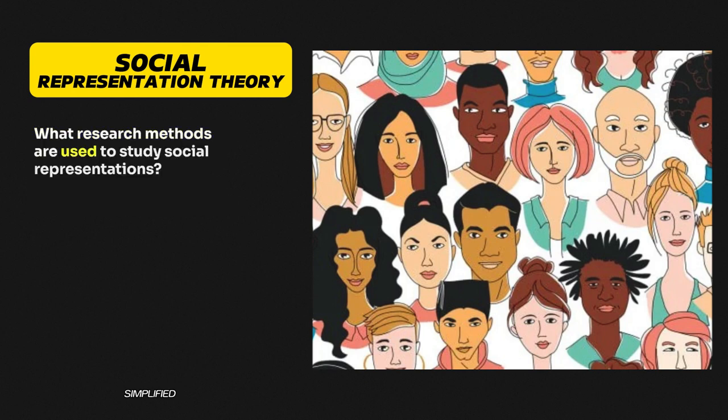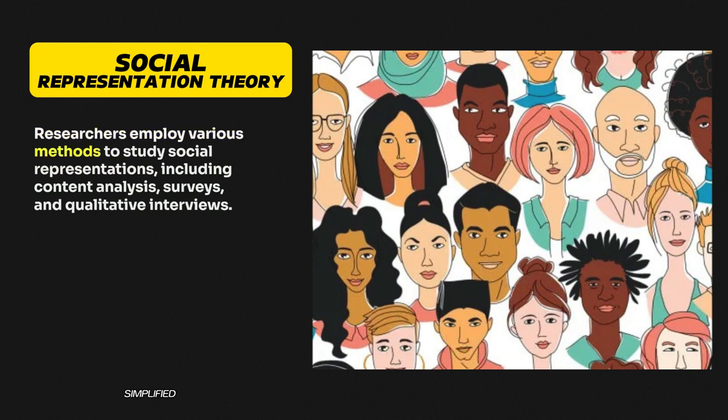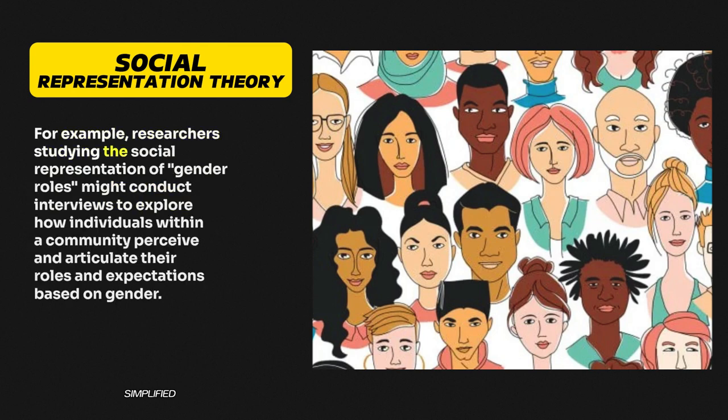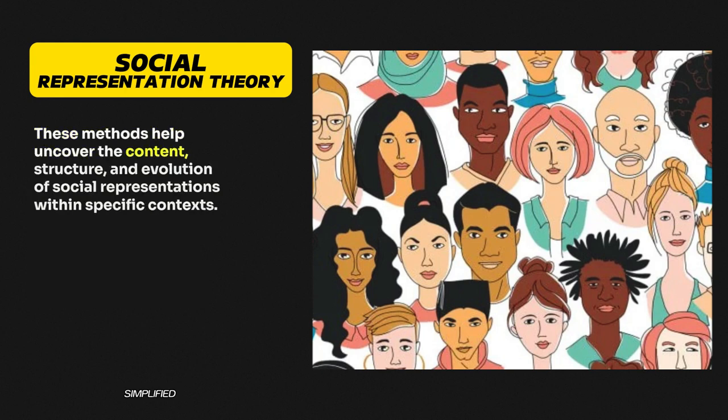Question 8: What research methods are used to study social representations? Researchers employ various methods to study social representations, including content analysis, surveys, and qualitative interviews. For example, researchers studying the social representation of gender roles might conduct interviews to explore how individuals within a community perceive and articulate their roles and expectations based on gender. These methods help uncover the content, structure, and evolution of social representations within specific contexts.